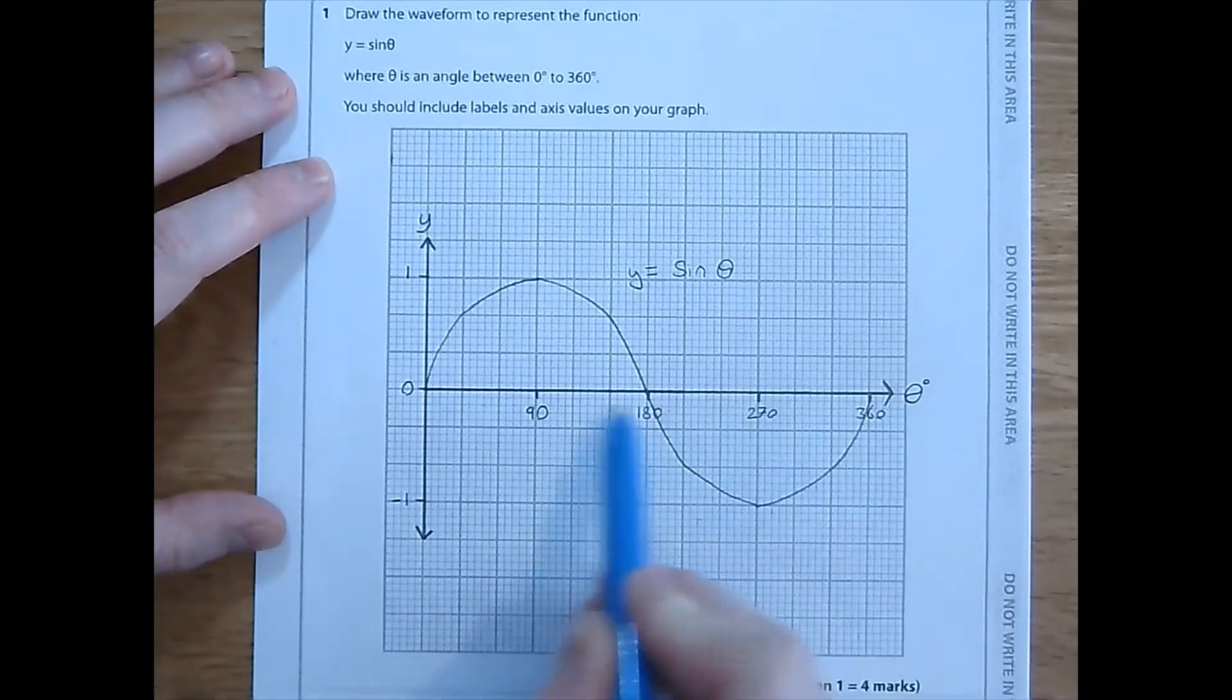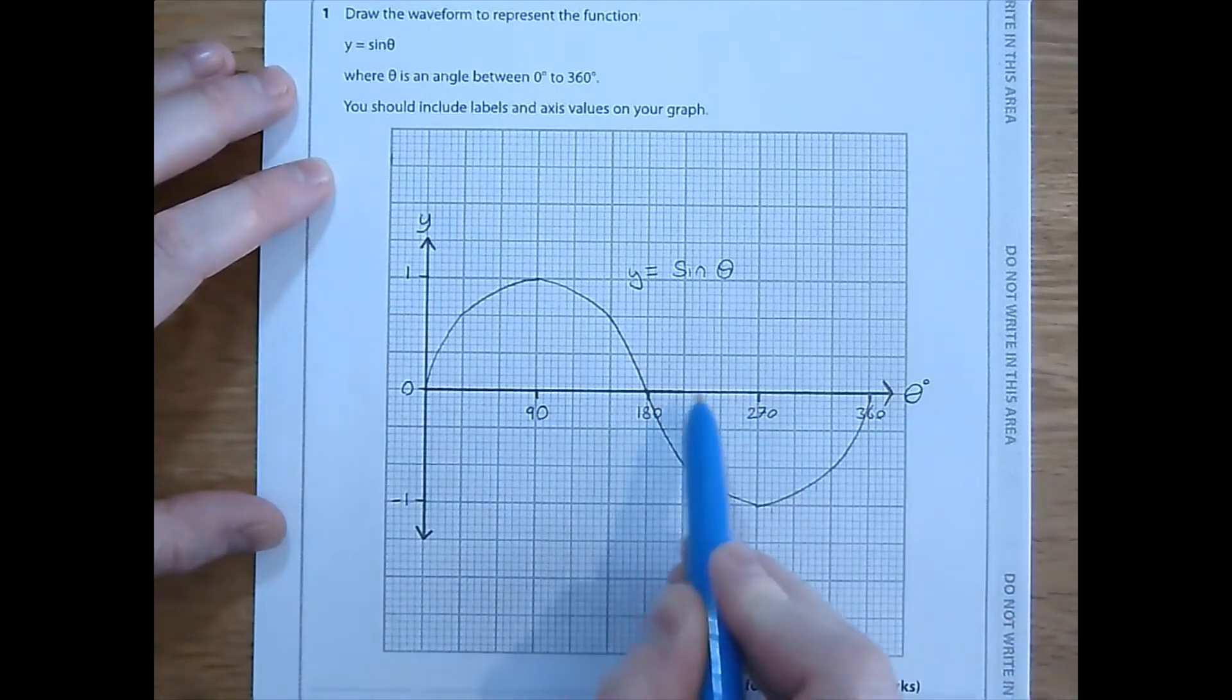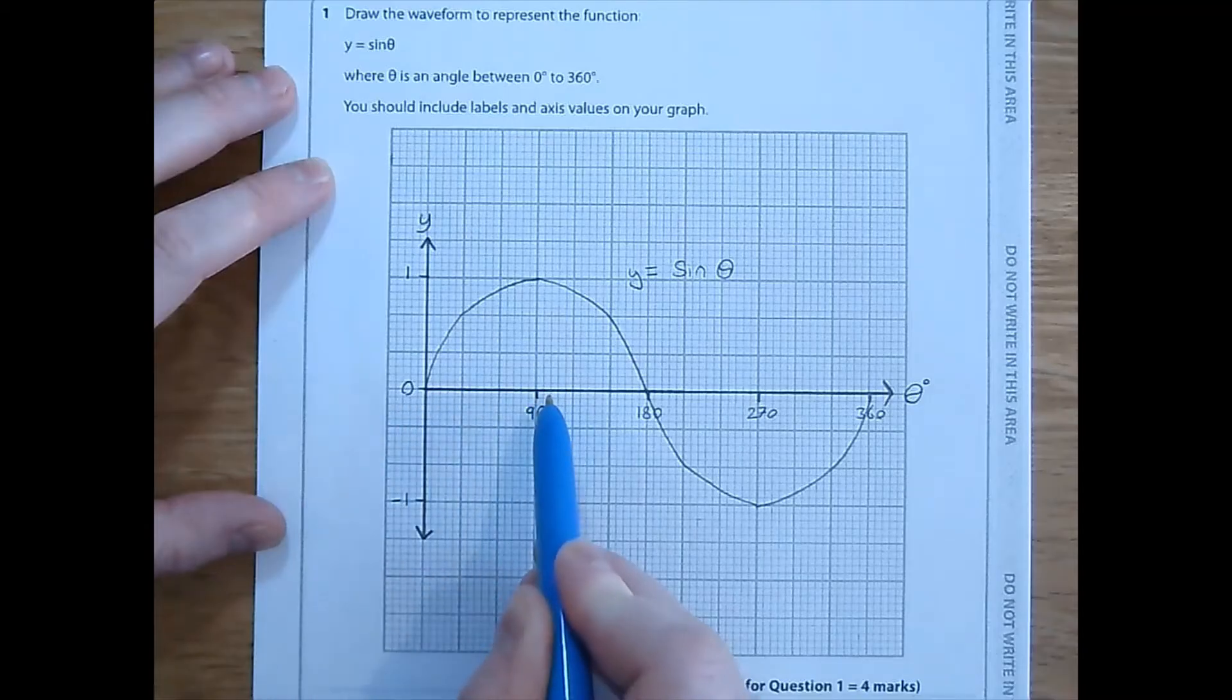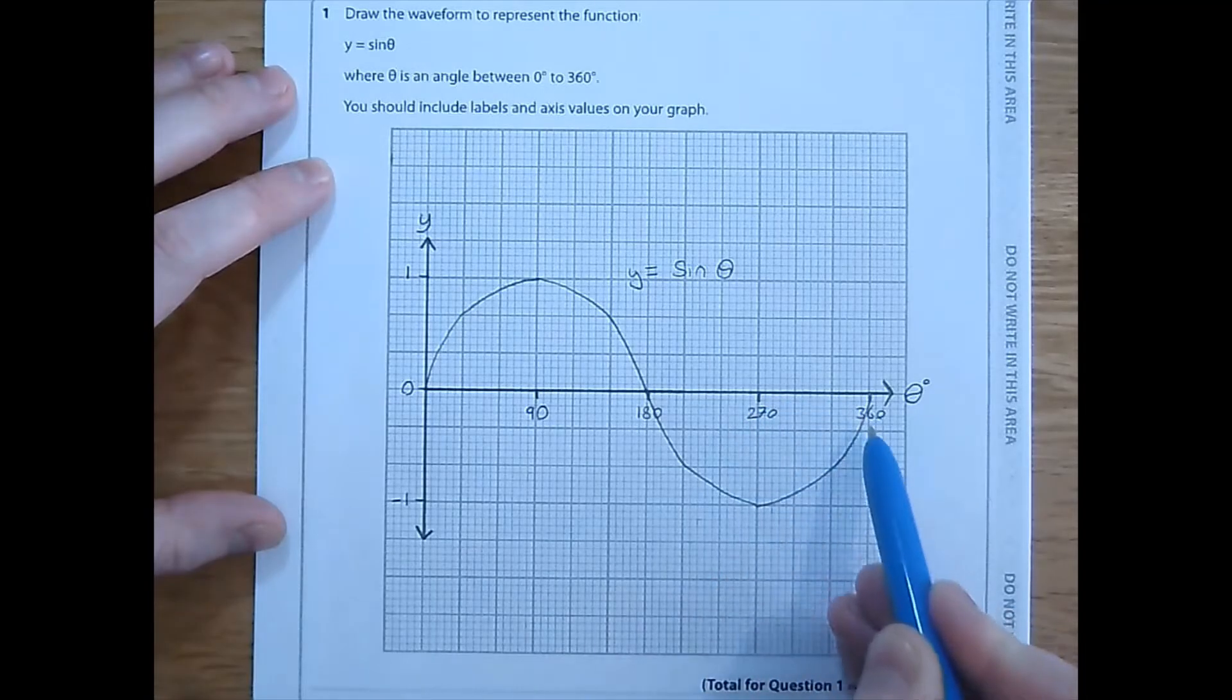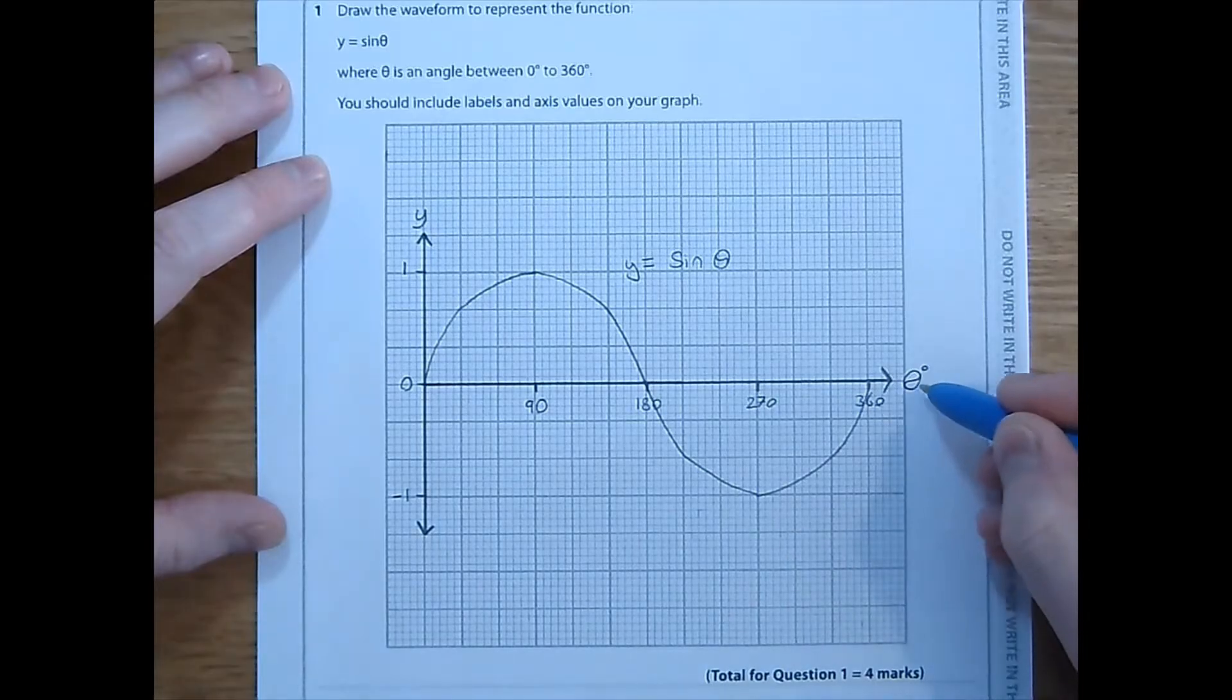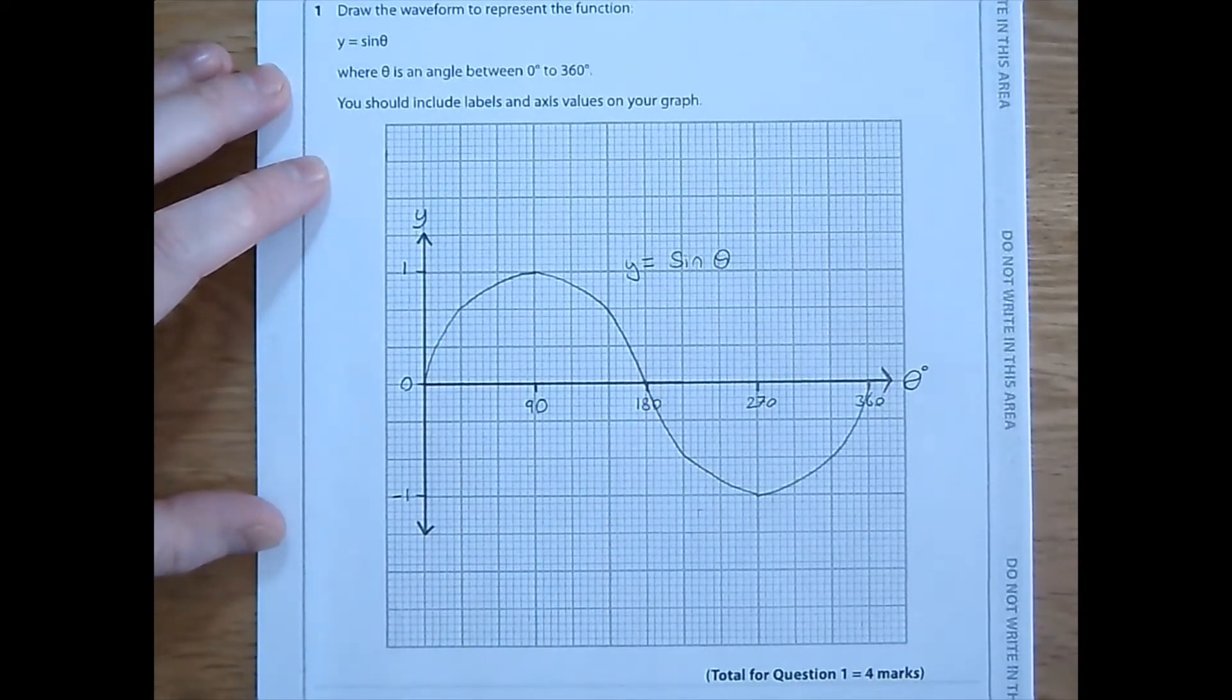Now, horizontally, it doesn't have to be the same as vertically, but horizontally, each step needs to be the same as the other horizontal steps. So, if it's 90 here, that's 3 squares, another 90 to 180 is also 3 squares, another 90 to 270, another 90 to 360. You can see I've also labeled my axes, theta in degrees and y. And that is what we need for this.